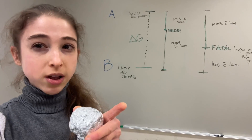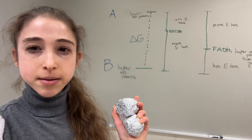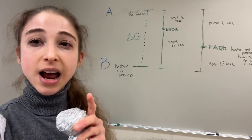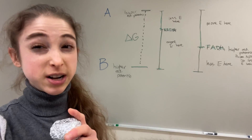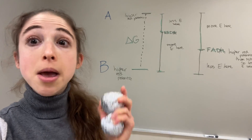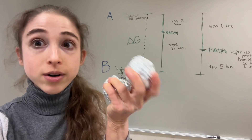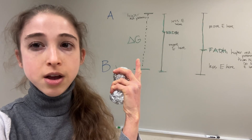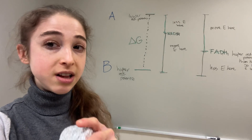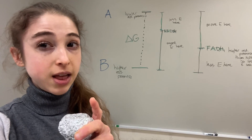Imagine that you have two molecules, A and B. We'll say that B has a higher standard reduction potential — it wants electrons more than A. Remember, OIL RIG: oxidation is loss of electrons, reduction is gain of electrons.